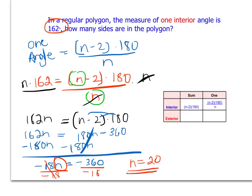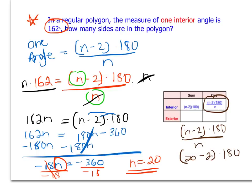n equals 20. This represents the number of sides — a regular polygon with 20 sides will have each interior angle equal to 162 degrees. It's a good idea to check this: plugging n equals 20 back into the formula for one interior angle gives us 18 times 180 divided by 20, which equals 162 degrees. So n equals 20 is confirmed as the answer for how many sides are in the polygon.